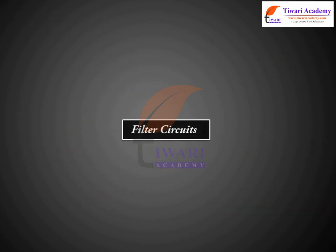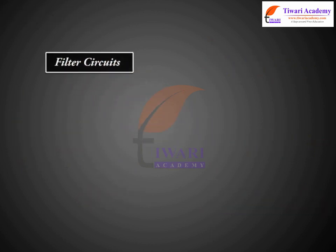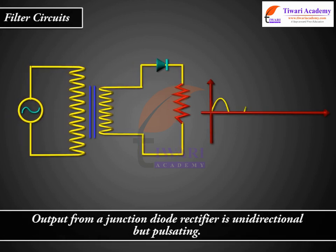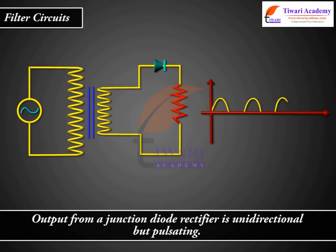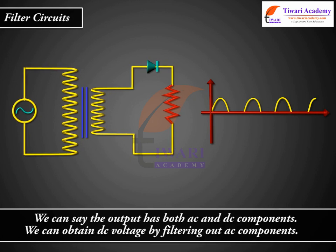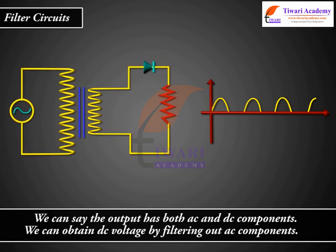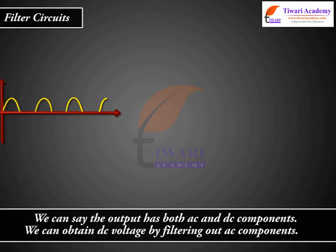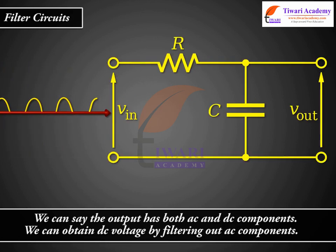Filter circuits. Output from a junction diode rectifier is unidirectional but pulsating. We can say the output has both AC and DC components. We can obtain DC voltage by filtering out AC components.